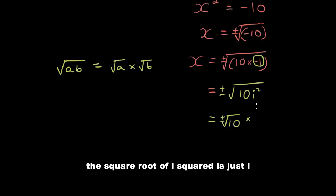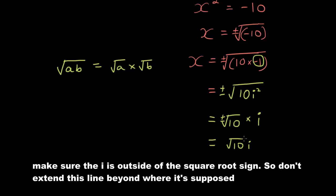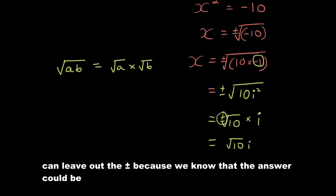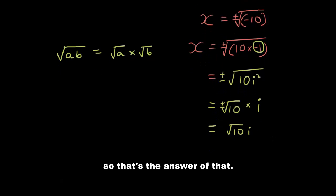So now I have the square root of 10 plus or minus square root of 10 times the square root of i squared is just i times i. And as you guys know, in algebra, we don't write the times. So it's just the square root of 10i. Make sure the i is outside of the square root sign. So don't extend this line beyond where it's supposed to be. And with surds we can leave out the plus or minus because we know that the answer could be either positive or negative when you square root of a number. So that's just assume knowledge. So that's the answer of that.